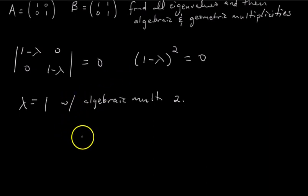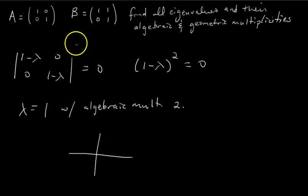So geometric multiplicity is the dimension of the eigenspace. So for lambda equals 1, what is the 1 eigenspace in this case? Well, the transformation that we're talking about is multiplying by this standard matrix 1, 0, 0, 1. What does that do? Well, it's just the identity matrix, so it doesn't change it.